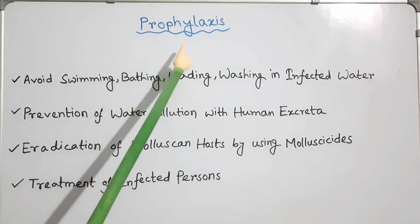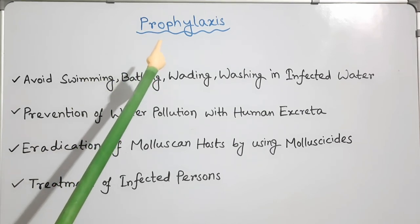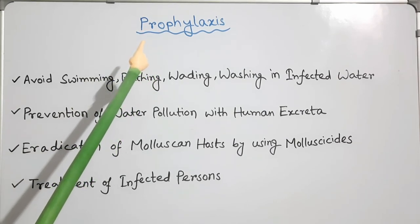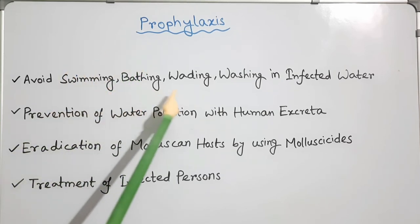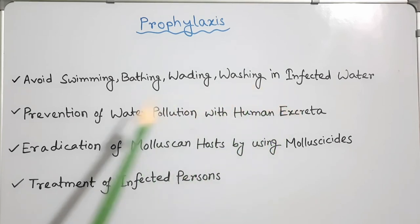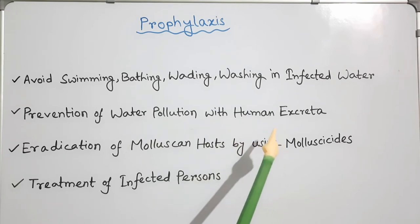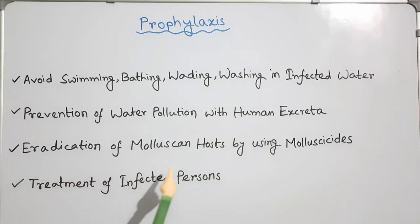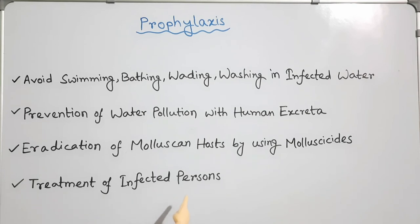Prophylaxis: There is no vaccine for cystosomiasis, so it is important to be aware of the risks. Avoid swimming, bathing, wading, or washing in infected water. Prevention of pollution of water with human excreta, eradication of the intermediate molluscan hosts by using molluscicides, and effective treatment of infected persons are key measures.